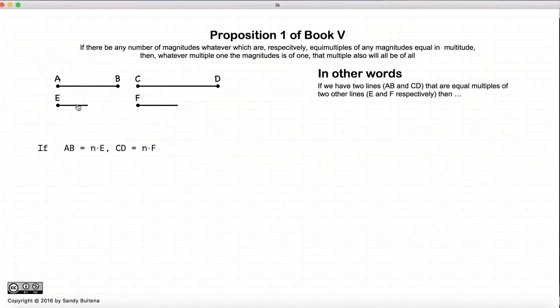That means that if E fits into AB n times, then F will fit into CD the same number of times n. Or in other words, mathematically, it would look like this.